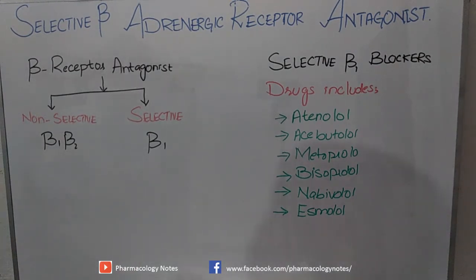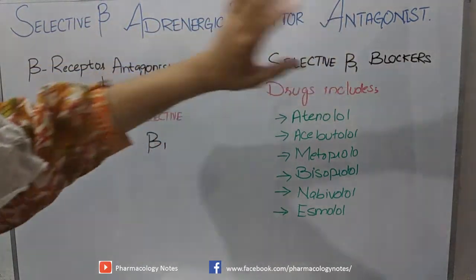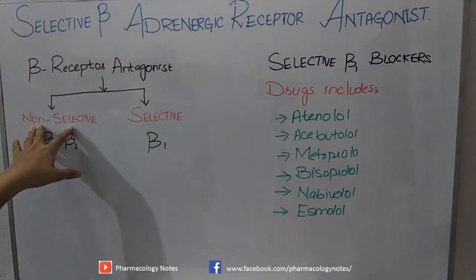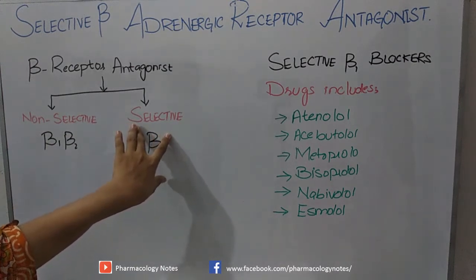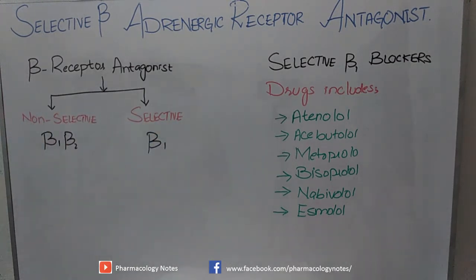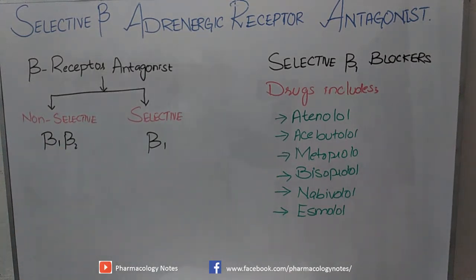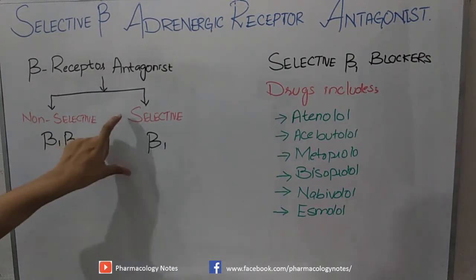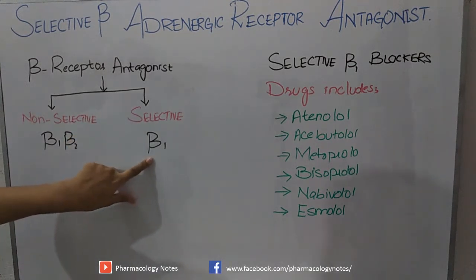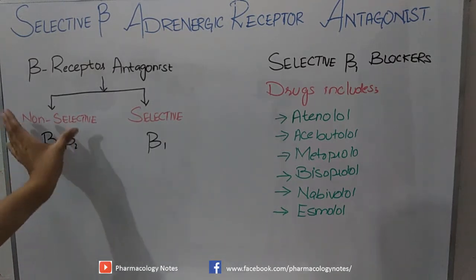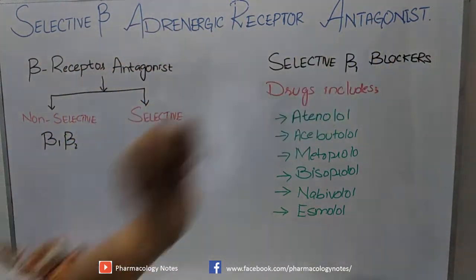As we have studied, adrenergic receptor antagonists are of two types: non-selective beta-blockers and selective beta-blockers. Non-selective beta-blockers have affinity for both beta-1 and beta-2 receptors, while selective beta-blockers have affinity only for beta-1 receptors.